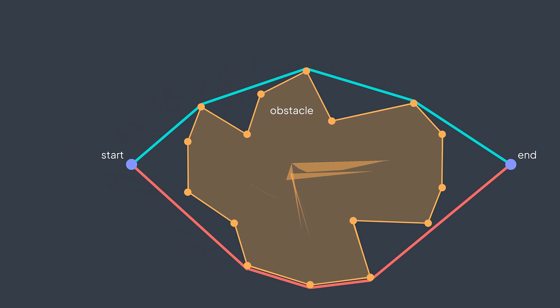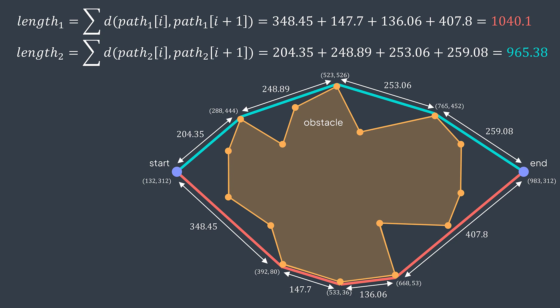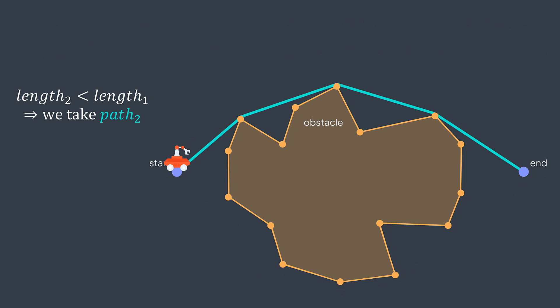Last step, we just calculate the total length and take the shortest one. In this example, we got a length of 1050.1 for path one, and a length of 965.38 for path two, which is smaller, this is why we take path two.